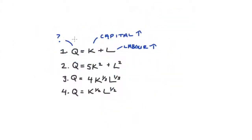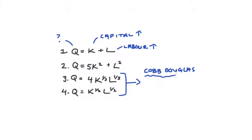Before you go, I wanted to make some more general claims about examples three and four, which are specific examples of a more general production function form called the Cobb-Douglas production function. If your production function is Cobb-Douglas, it can be represented as Q equal to A times K to the power of alpha times L to the power of beta. In our third example, A was four and alpha and beta were both a third. In our fourth example, A was one and alpha and beta were a half.